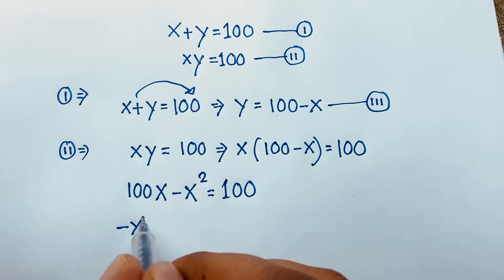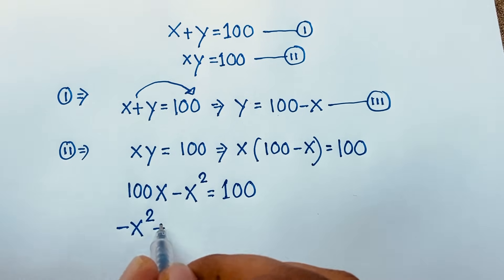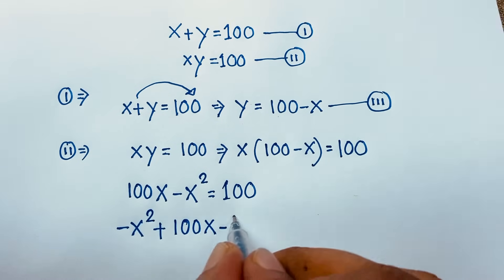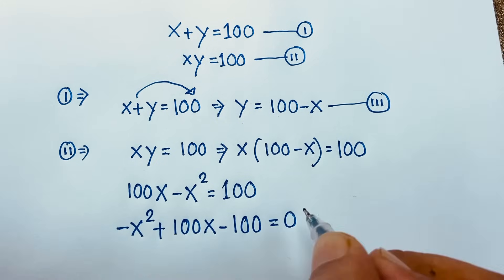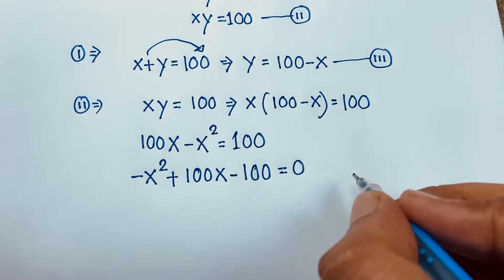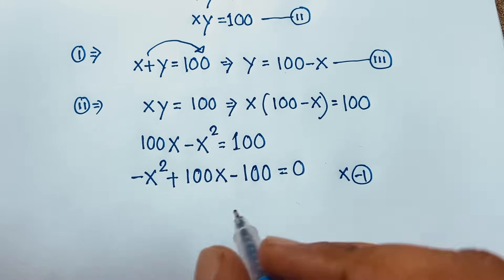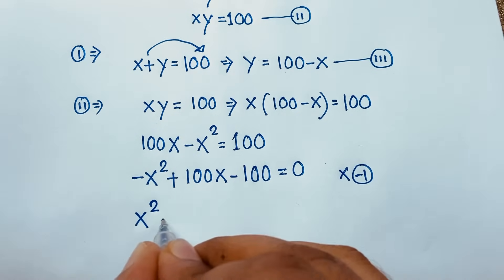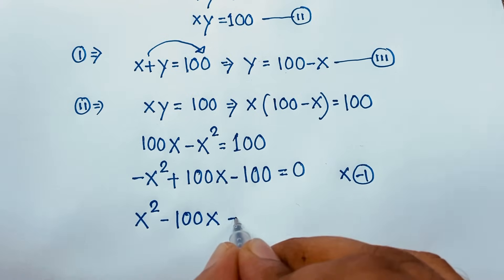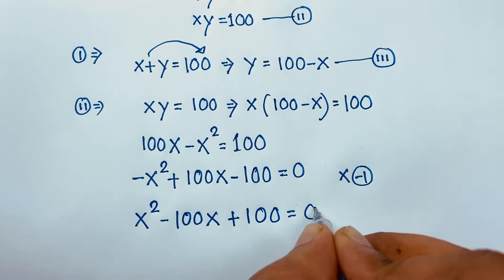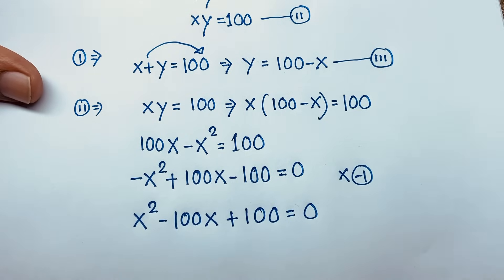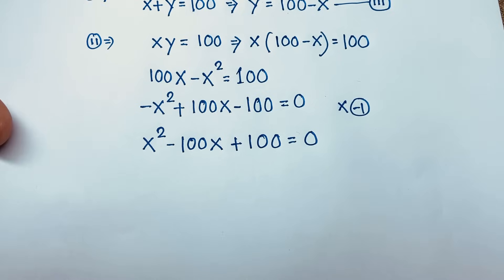At this moment we have negative x squared plus 100x, and if I move 100 to this side it will be minus 100 equals 0. Now if I multiply both sides by negative 1, this gives positive x squared minus 100x plus 100 equals 0. So we find out a nice quadratic equation: x squared minus 100x plus 100 equals 0.